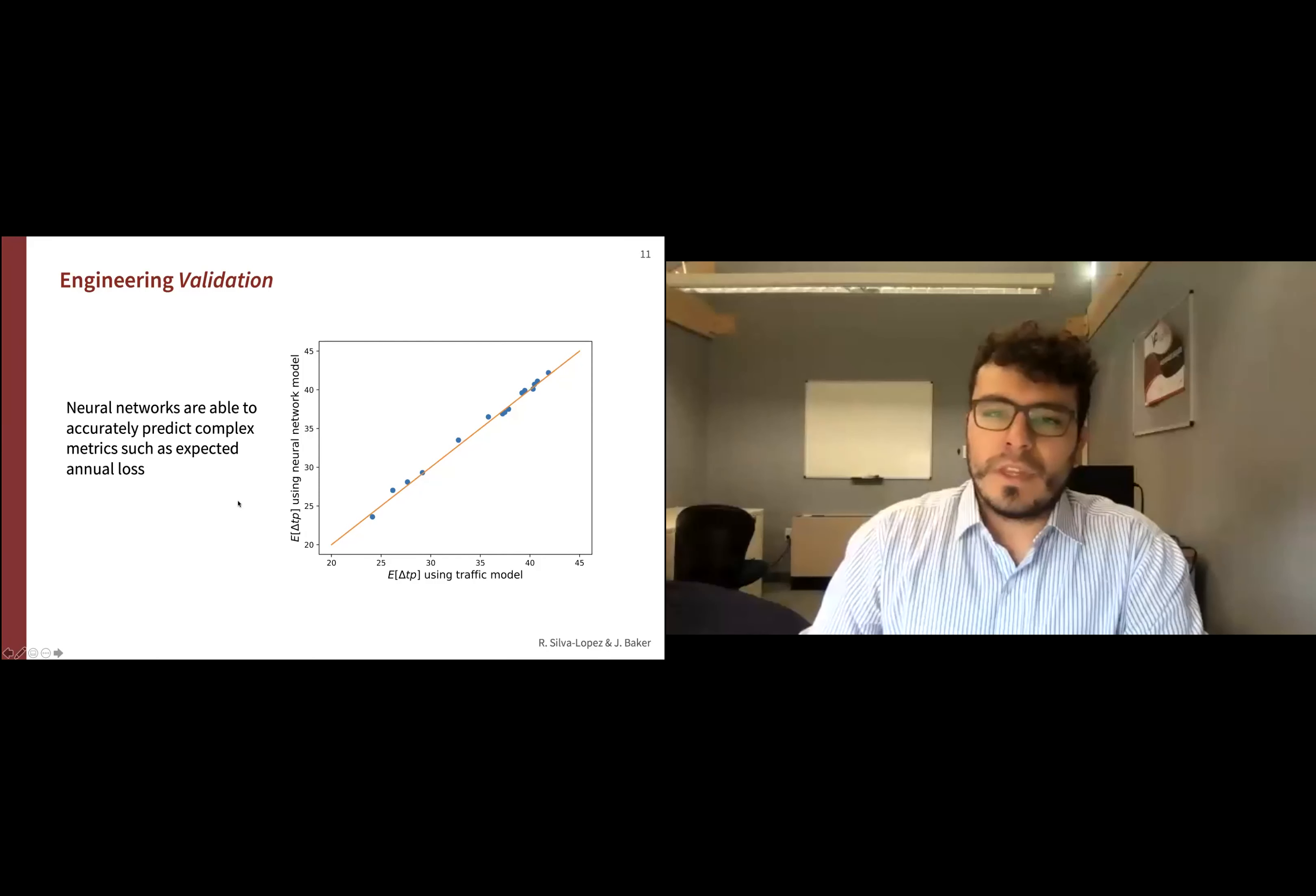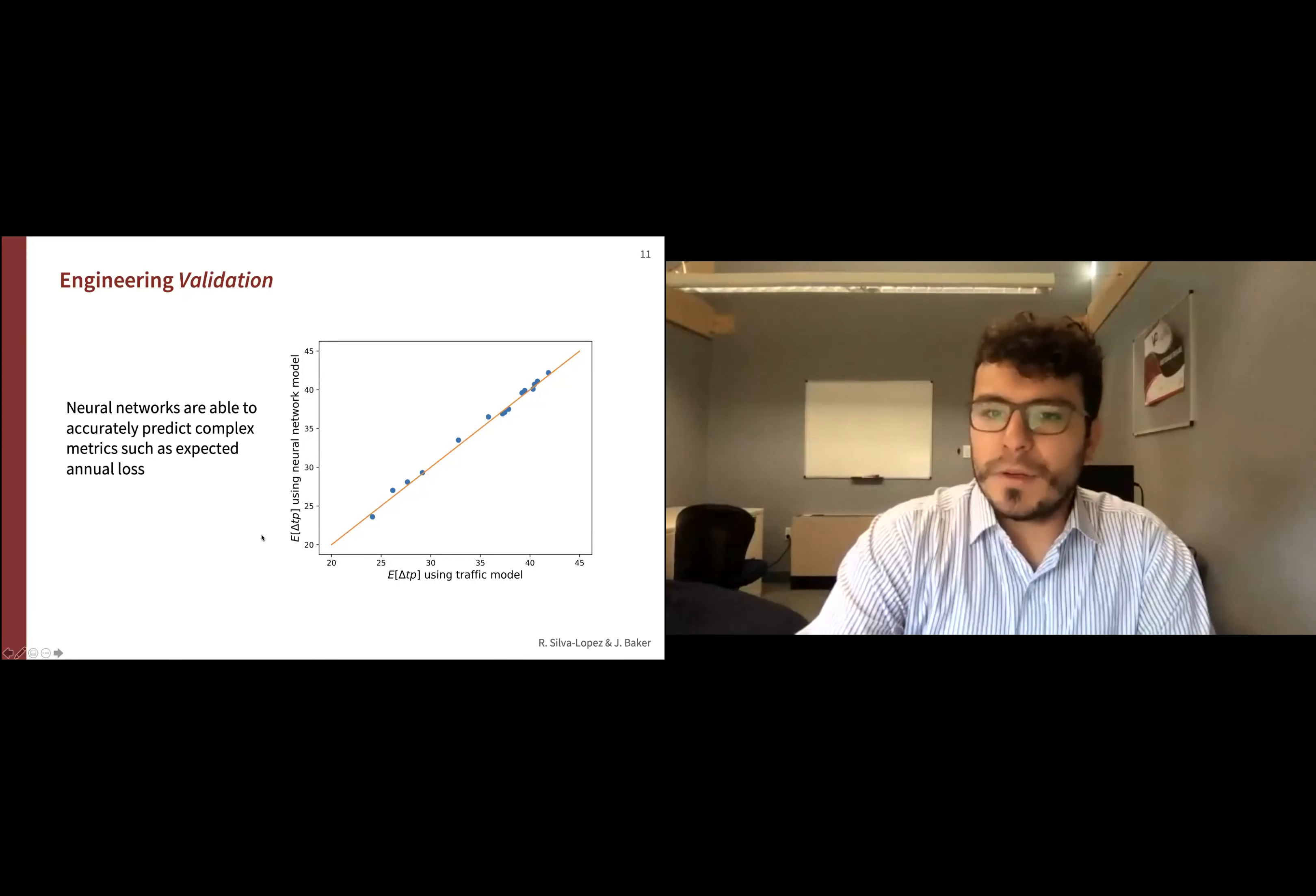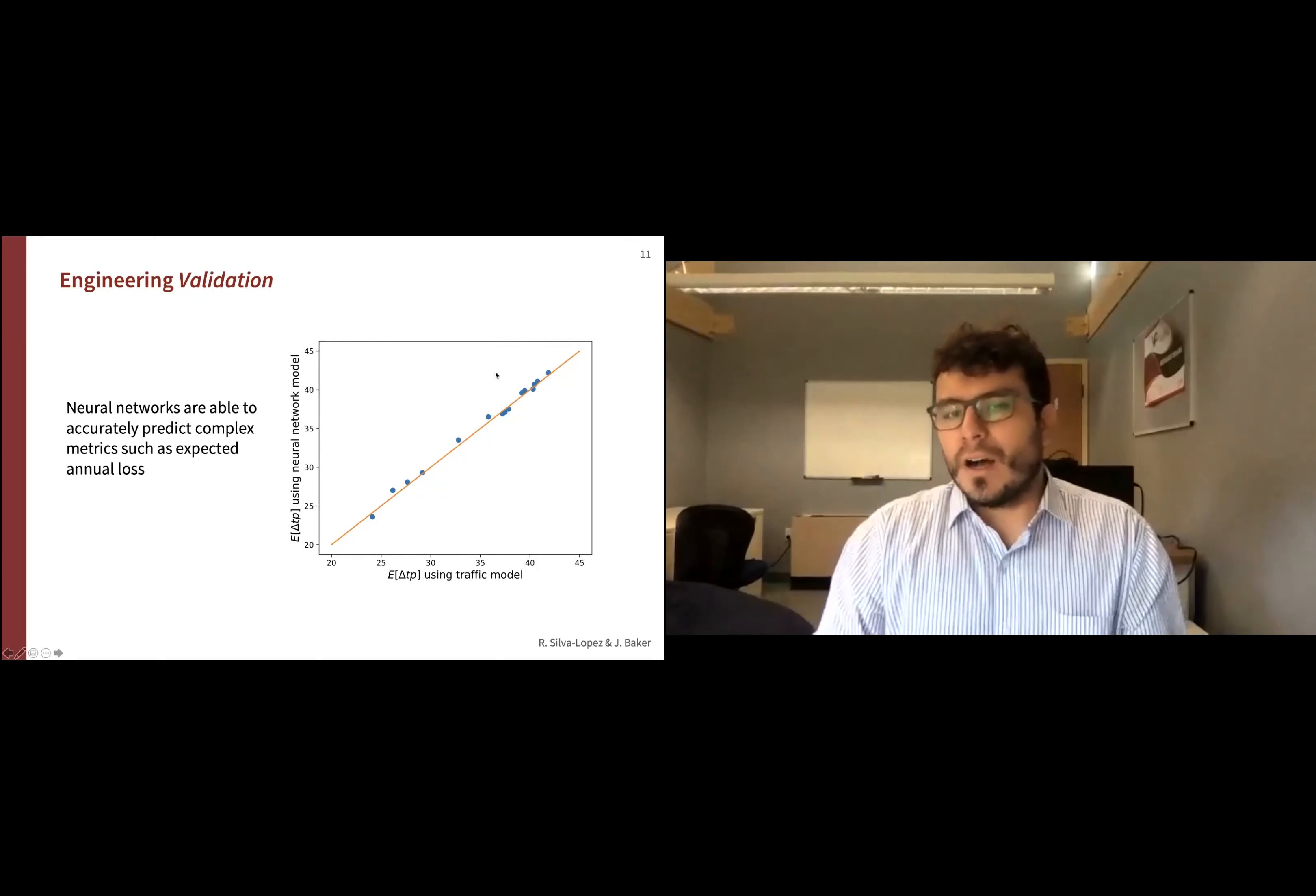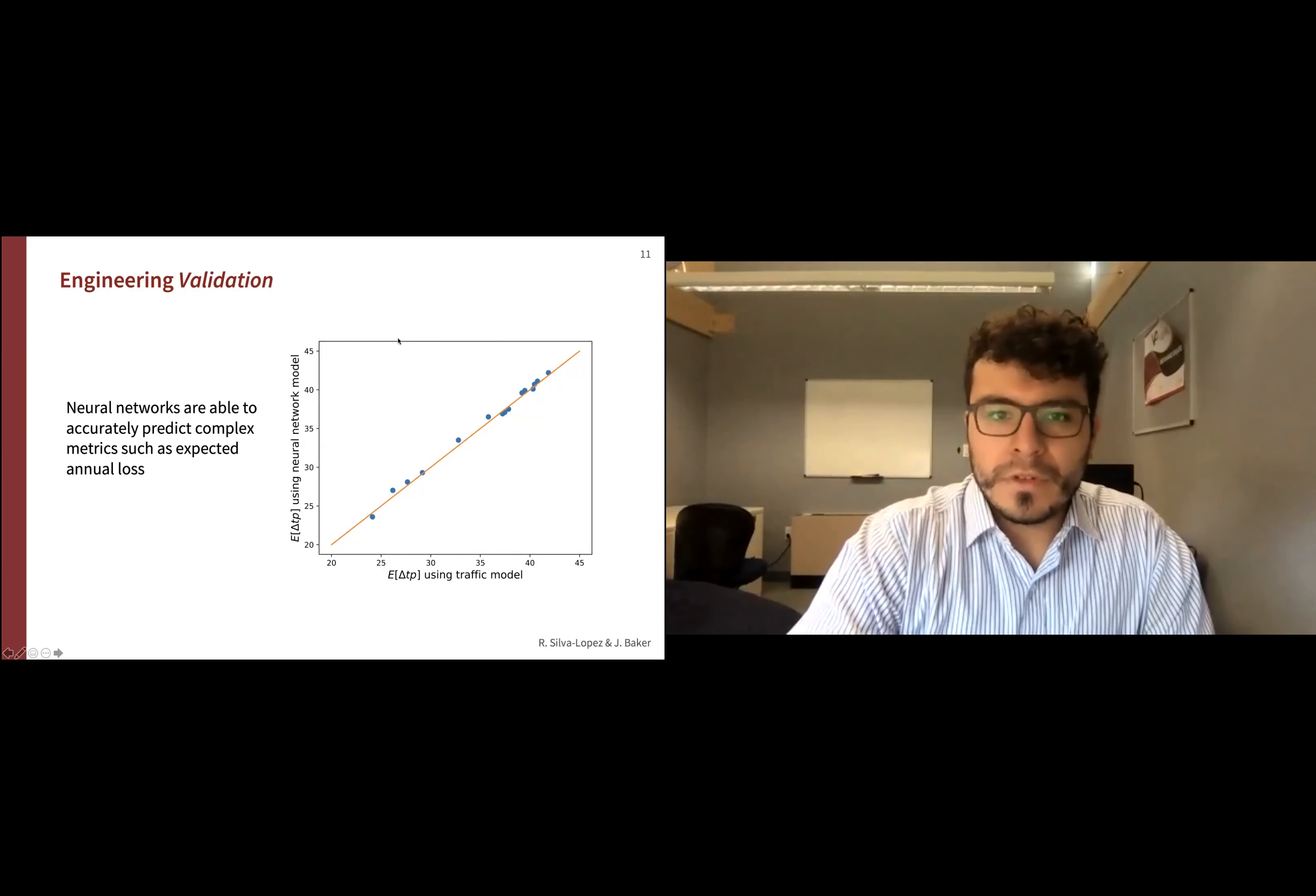When it comes to the second metric we mentioned, we also thought about expected transportation annual loss. Here I'm showing what is basically the area under the curve of the previous slide. On the y-axis is the result computed by using the neural network model, and the x-axis is the traffic model. You can conclude that it's basically aligned with the identity line, which is optimal, which means that the results we get for that metric either using the neural network or the traffic model are the same.